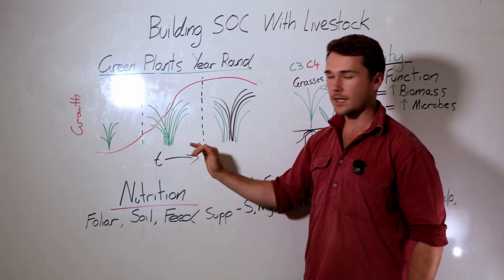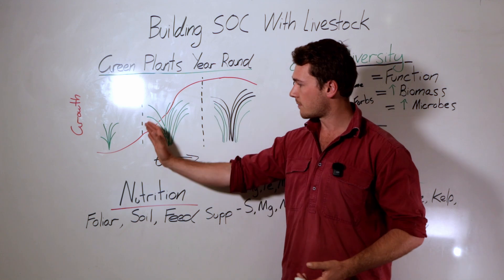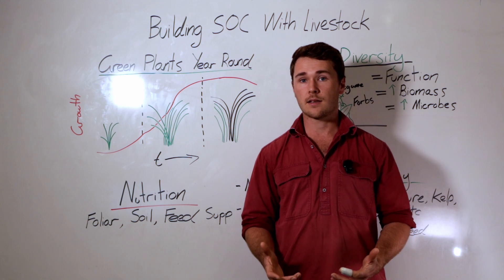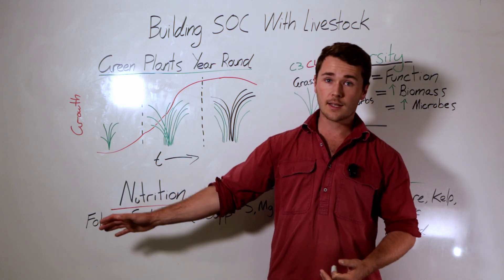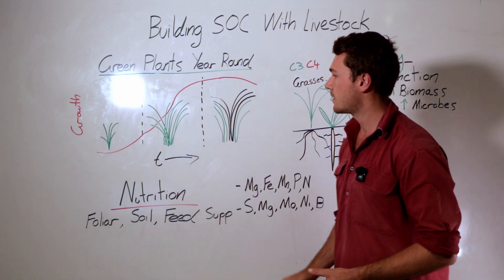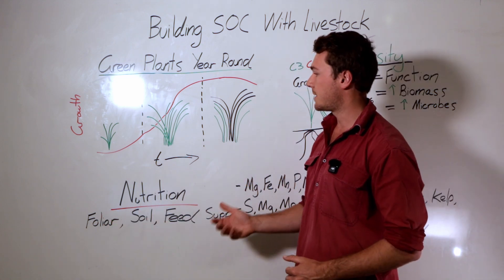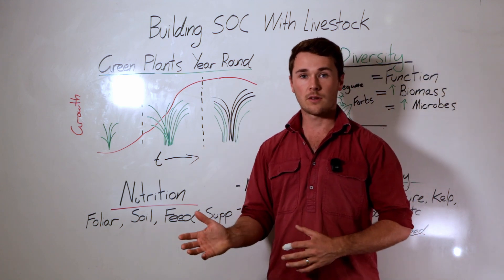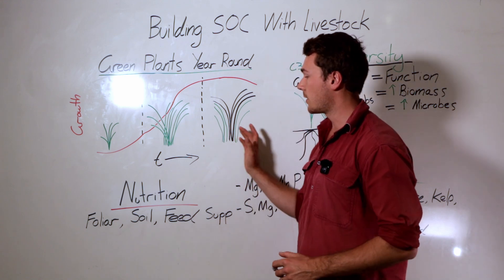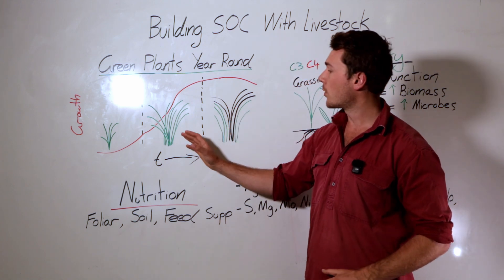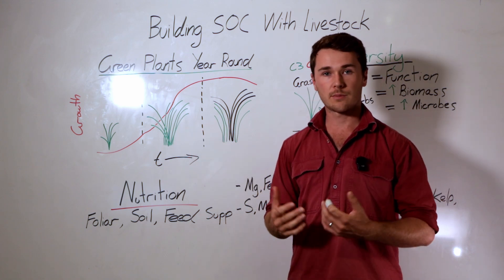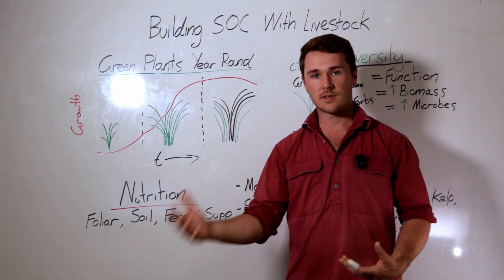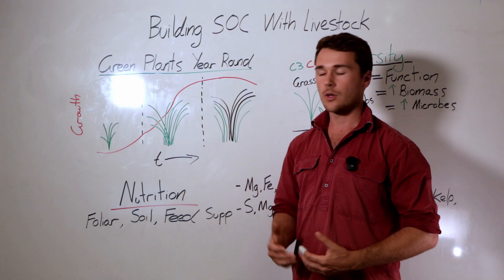The time from grazing back to recovery depends on your system — it might take 30 days in a high rainfall environment and could push out to 90 days or even a year in some contexts. This is very much context-specific, depending on rainfall, temperature, and whether you're in the growing season. In spring or autumn you're in a better temperature range, so recovery happens much faster than in the middle of winter or summer.